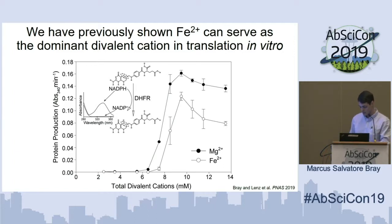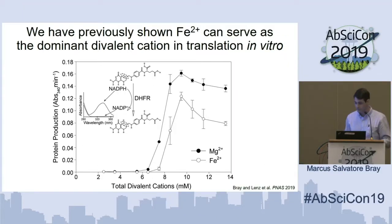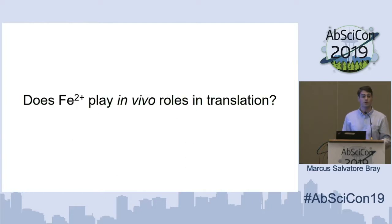In these experiments — and you can see that just in the lower line here with iron — we very much took the translation system and transported it to the environment of its ancestors, and were able to show that it retains function in such an environment, in vitro of course. After showing that in vitro, we then wanted to go in and see if there's anything going on in vivo with iron in the ribosome.